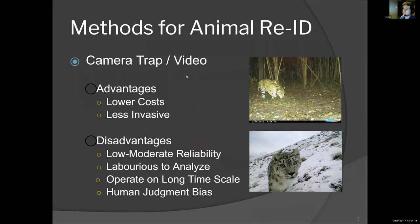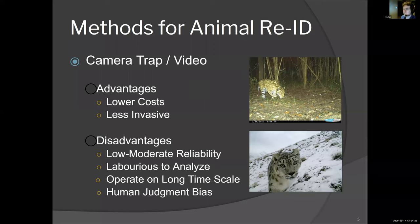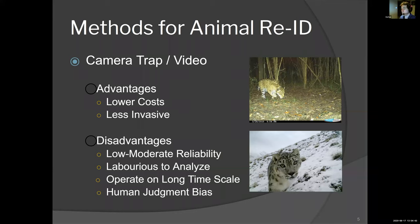An alternative approach involves using camera traps and video. It has advantages because it's lower cost and less invasive to the animals. However, there are multiple disadvantages including low to moderate reliability depending on the species — it's laborious to analyze, typically a grad student looking over tens of thousands of images. They operate on extremely long time scales: by the time you set up your camera traps, leave them out for months to years, retrieve the SD cards, analyze them using a human, build a report, and submit it, it's on the timescale of years. And ultimately they are also subject to human judgment bias.